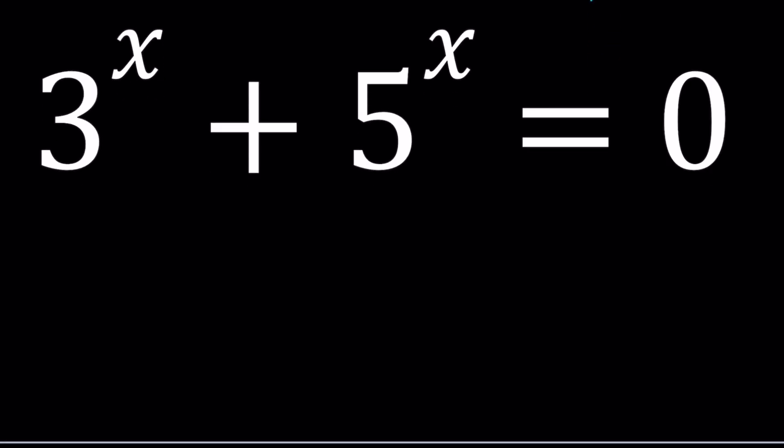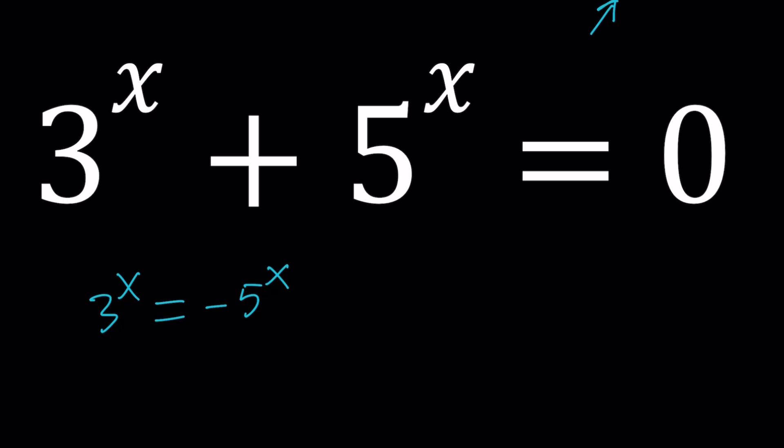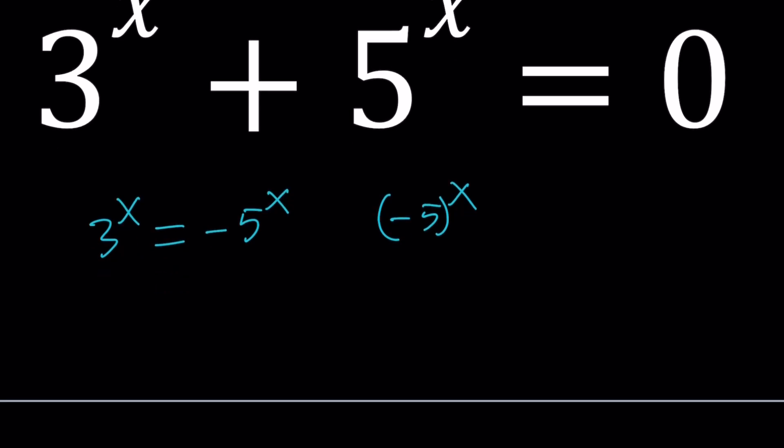Let's write this equation a little differently, like 3 to the power x equals negative 5 to the power x. Obviously, something I can't do is embed the negative inside the parentheses, so I can't really do this. Because I don't know if x is going to be a positive or negative quantity or even rational or irrational or even real. So, that's a lot of complications.